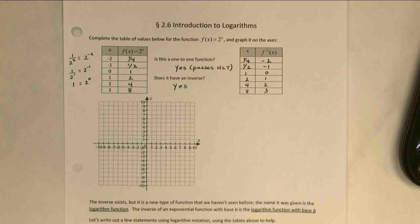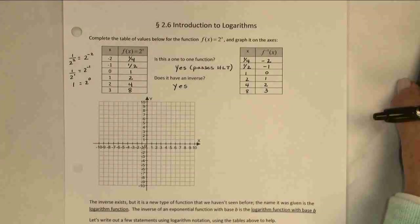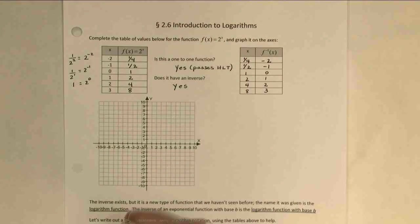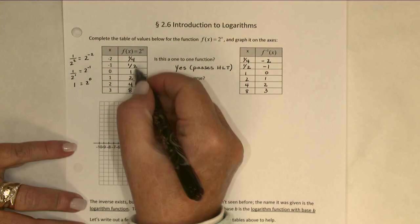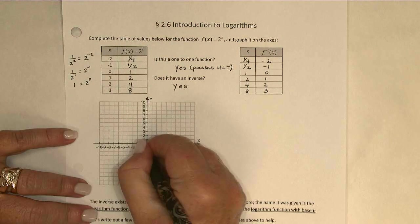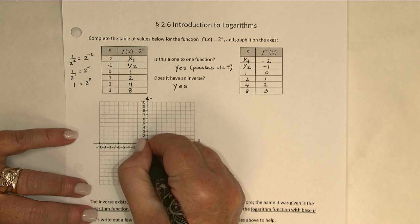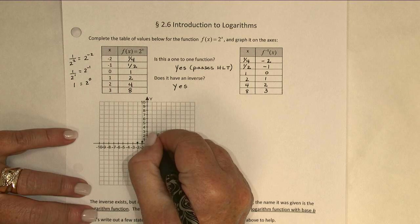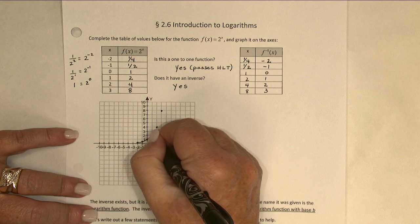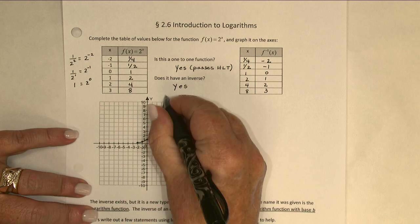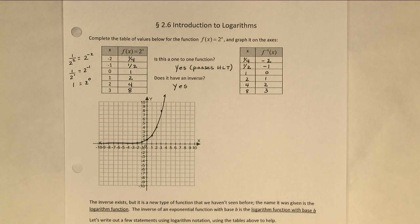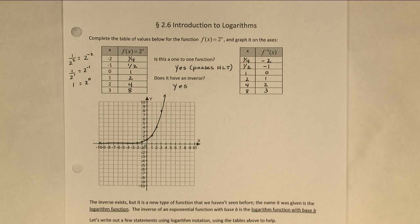I'm going to go ahead and graph both of these functions on the axes. We already know the exponential growth function looks like what the calculator showed us, but let's graph it very precisely by putting these points on the graph. And there's our familiar exponential growth function with that horizontal asymptote right above the x-axis.